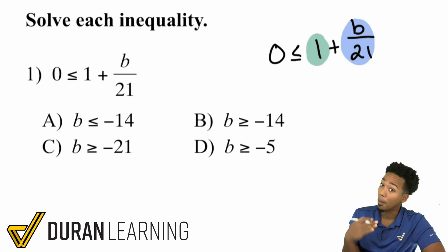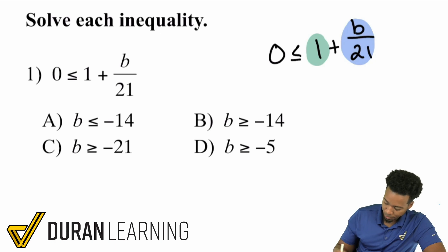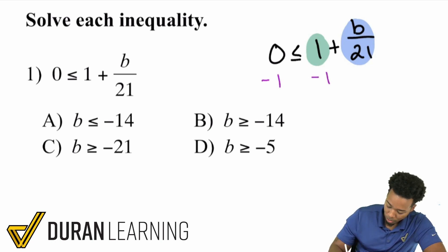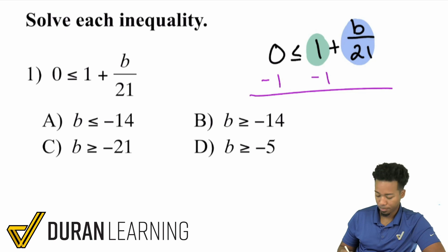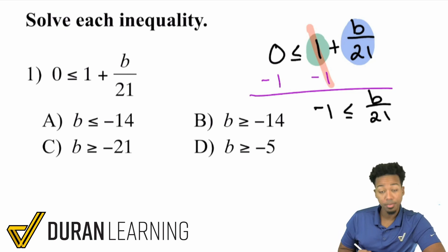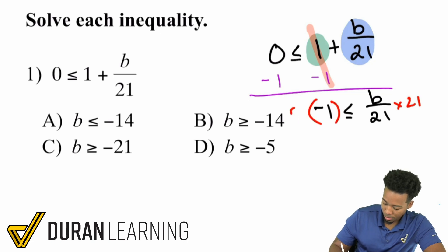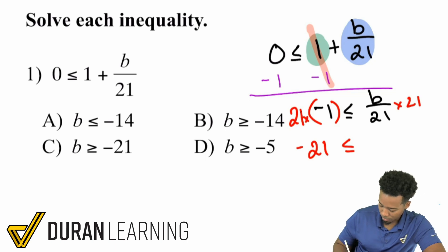I do expect you to go back and look at two-step equations — look at part 2 or 3 where we have fractions. The first thing I'm going to do is subtract 1 on both sides. That cancels out on the right side, giving me negative 1 is less than or equal to B over 21. And now I'll multiply both sides by 21, which gives me negative 21 is less than or equal to B.